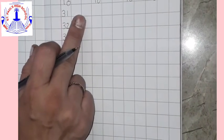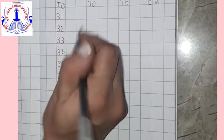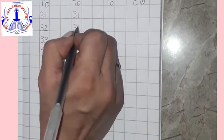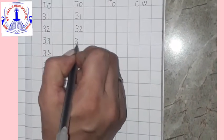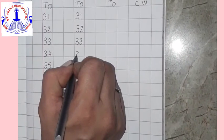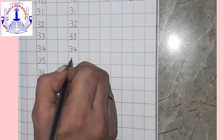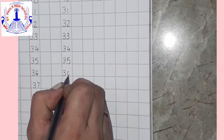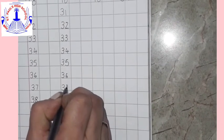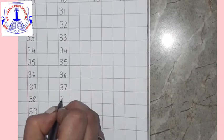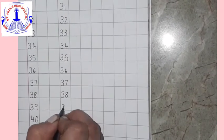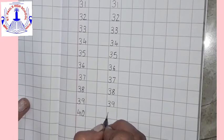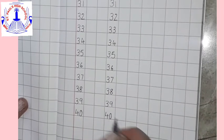Now again, after leaving two lines, start writing. 31, 32, 33, 34, 35, 36, 37, 38, 39. And what comes after 39? 4, 0, 40.